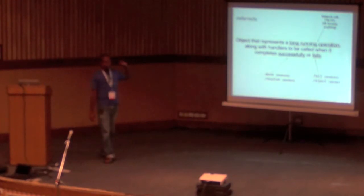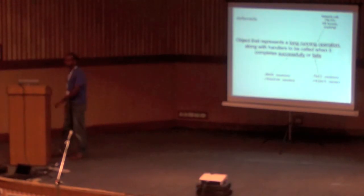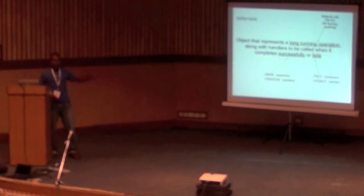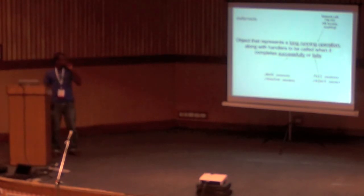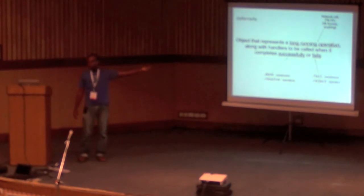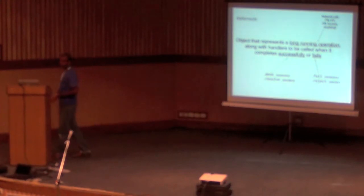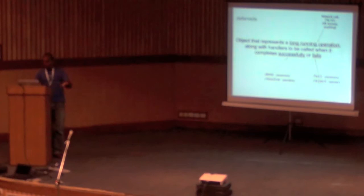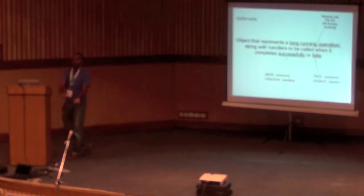Deferreds are an abstraction over callbacks. They are not a language feature — at least in JavaScript they don't give you anything extra. They are a way to think about long-running computations as objects that let you reason about and write code in a clearer way than just directly using callbacks. A deferred is a JavaScript object that represents a long-running operation like network I/O, file or database access, along with a set of handlers that can be called when it completes successfully or fails.